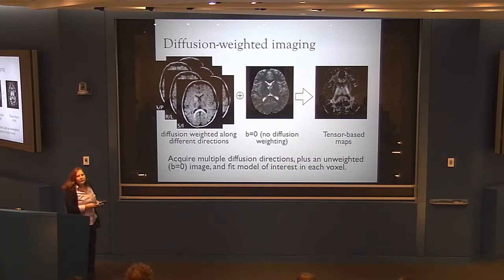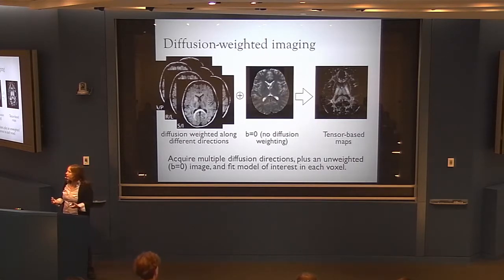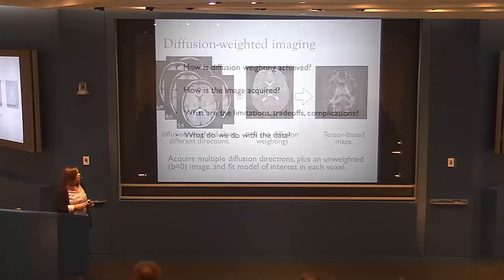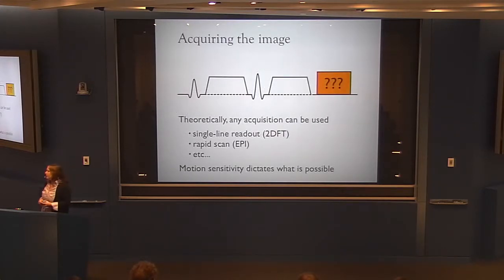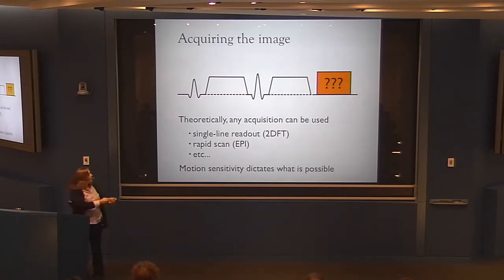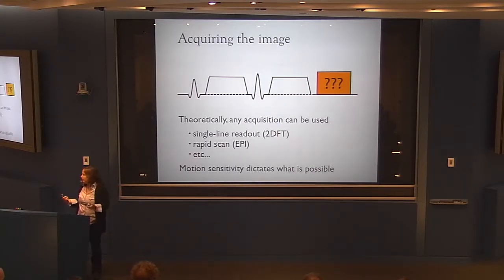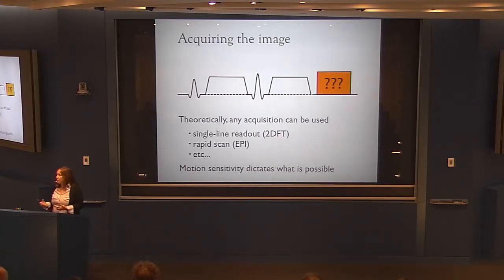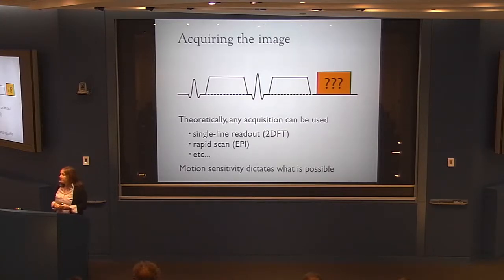How do we acquire the image now that we have a diffusion-weighted signal? Theoretically, once we've played out the RF pulses and diffusion gradients, we could do anything to encode spatial information. We could do single-line readouts like structural images, or a rapid scan like echo planar imaging. In practice, what we do is primarily dictated by motion — secondarily by time constraints.